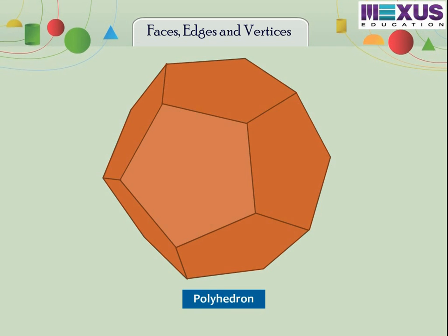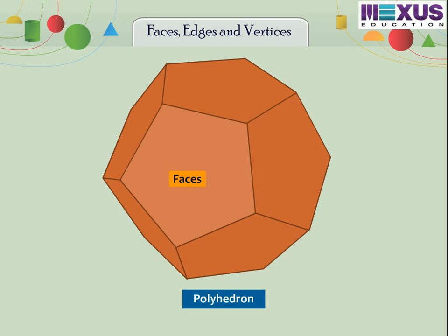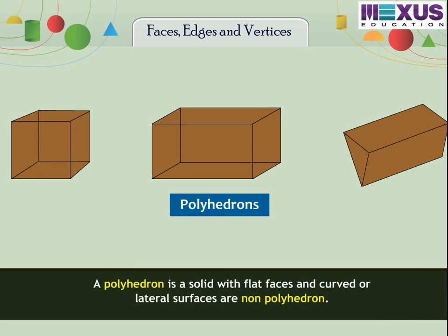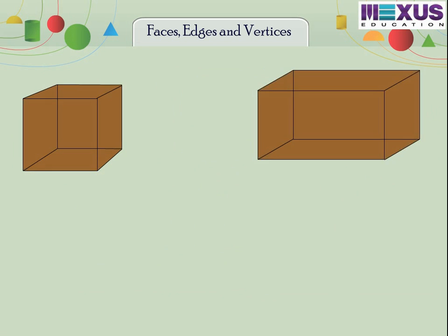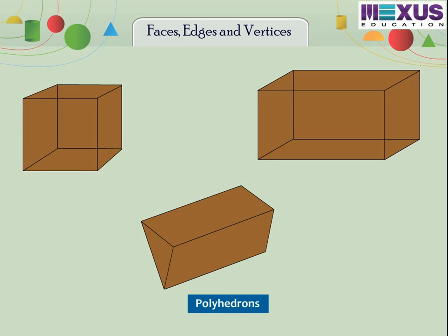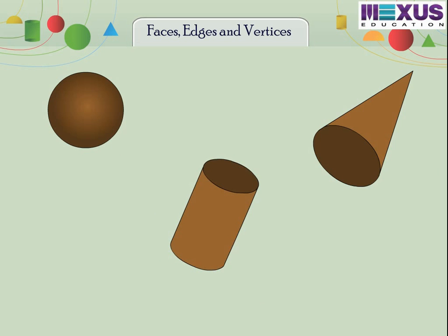Let us learn about polyhedron. Each of the solids is made up of polygonal regions, which are called its faces. These faces meet at edges, which are line segments, and the edges meet at vertices, which are points. Such solids are called polyhedrons. A polyhedron is a solid with flat faces, and curved or lateral surfaces are non-polyhedron. Cubes, cuboids, prisms are few examples of polyhedrons. Spheres, cones, and cylinders are a few examples of non-polyhedrons.